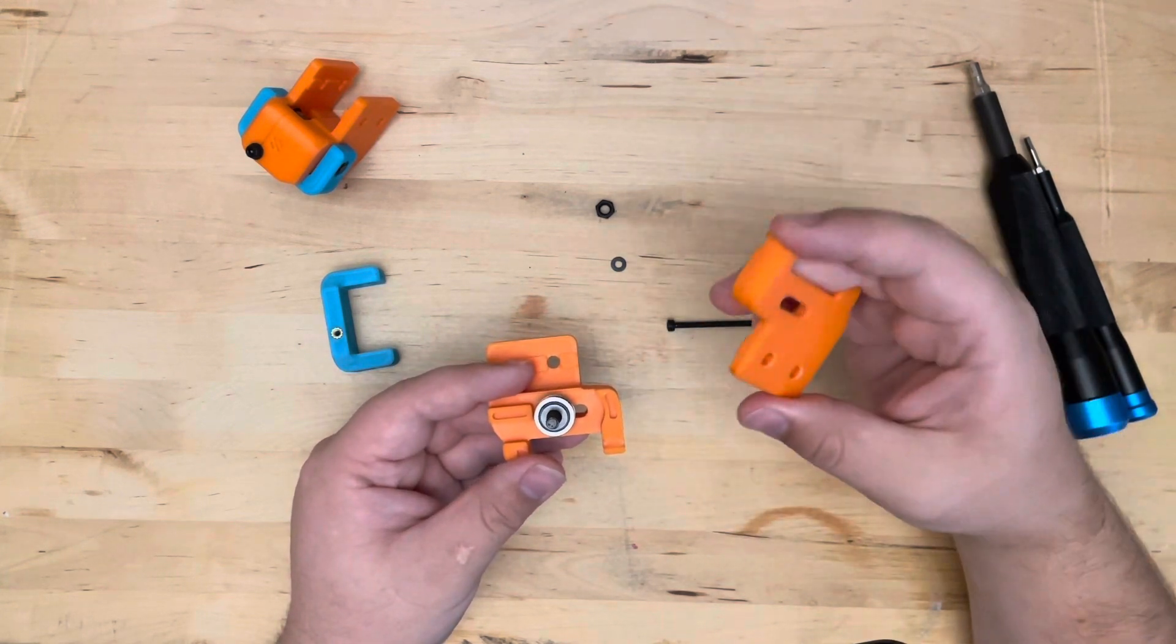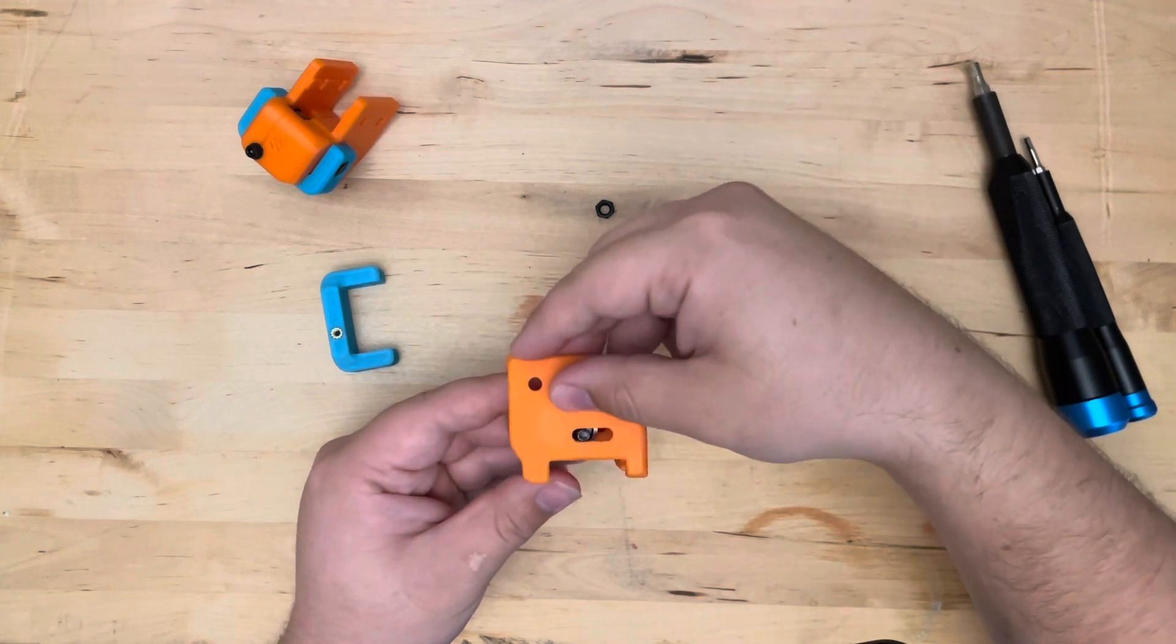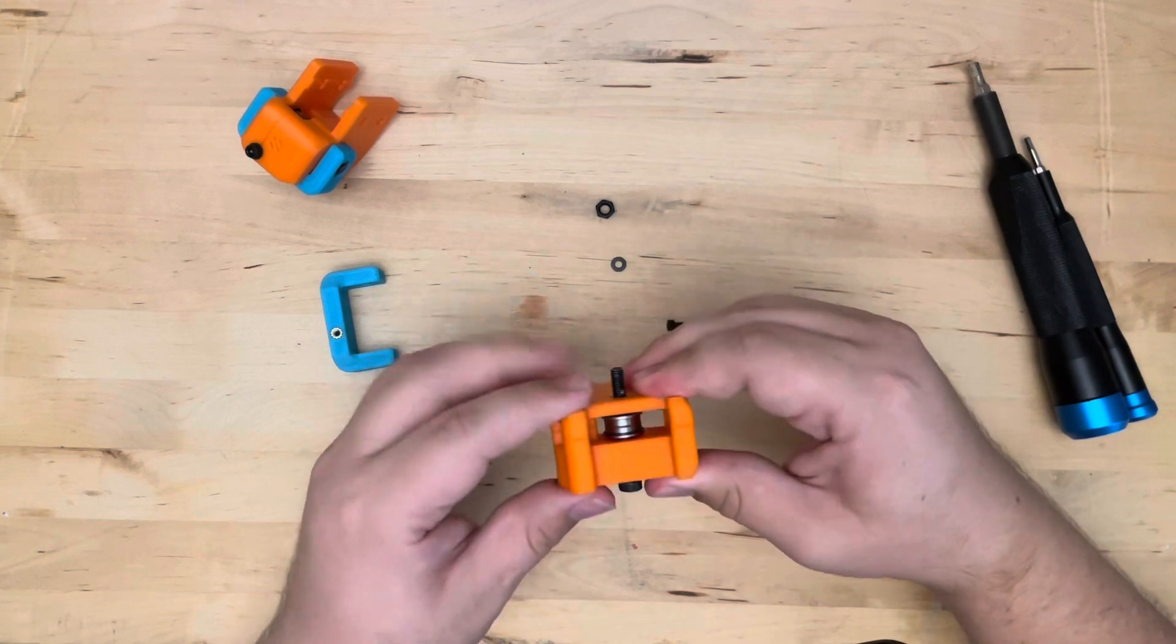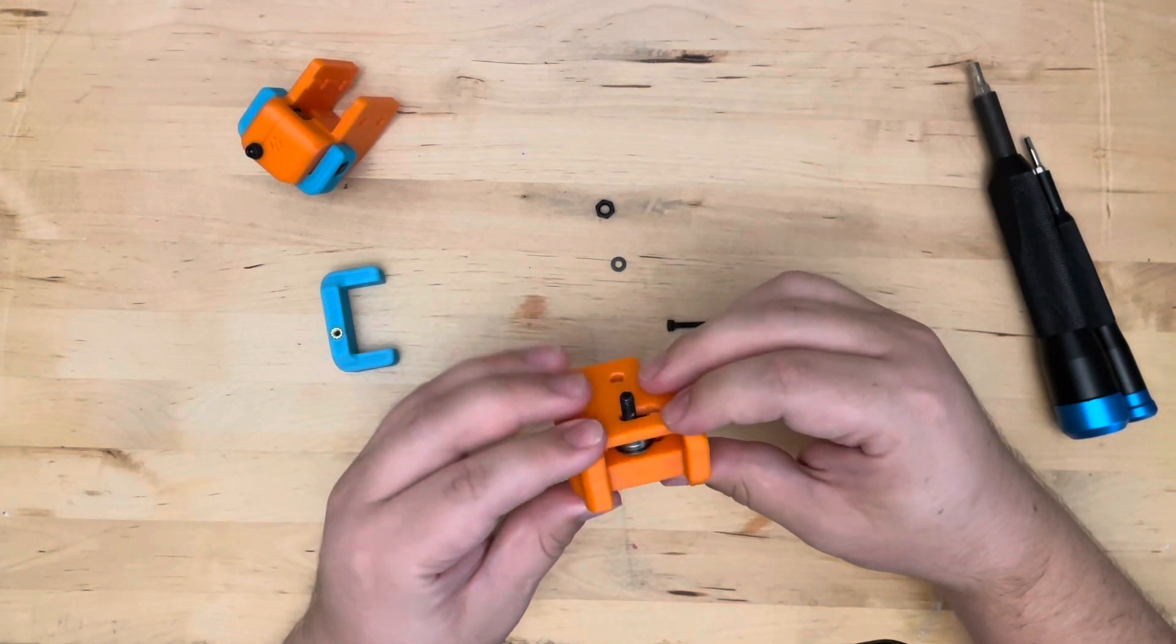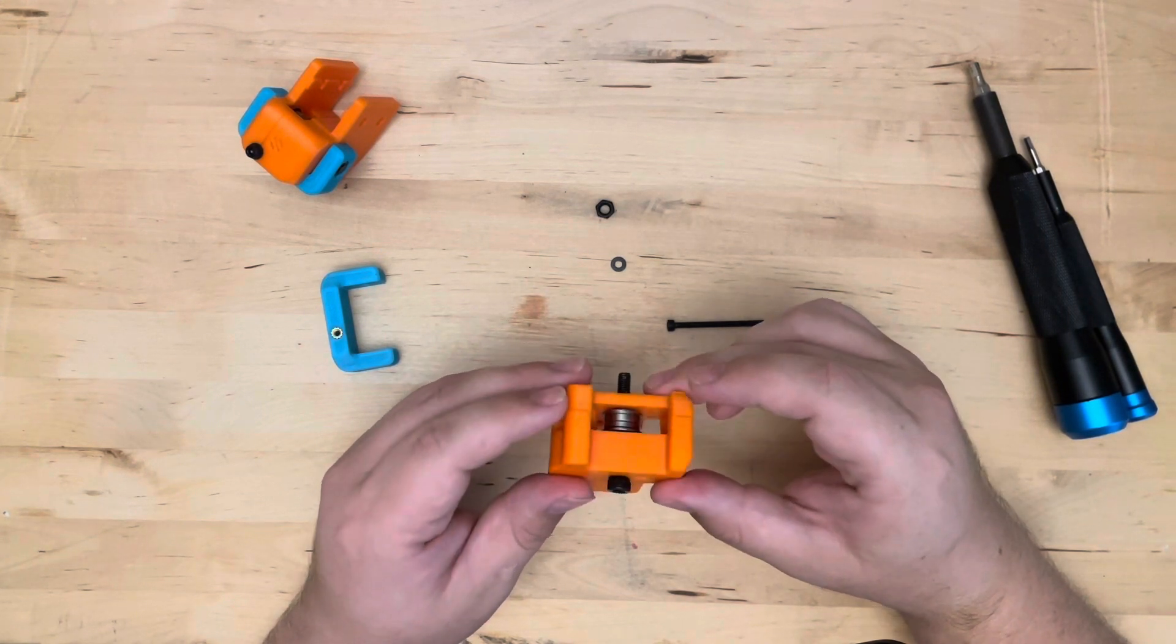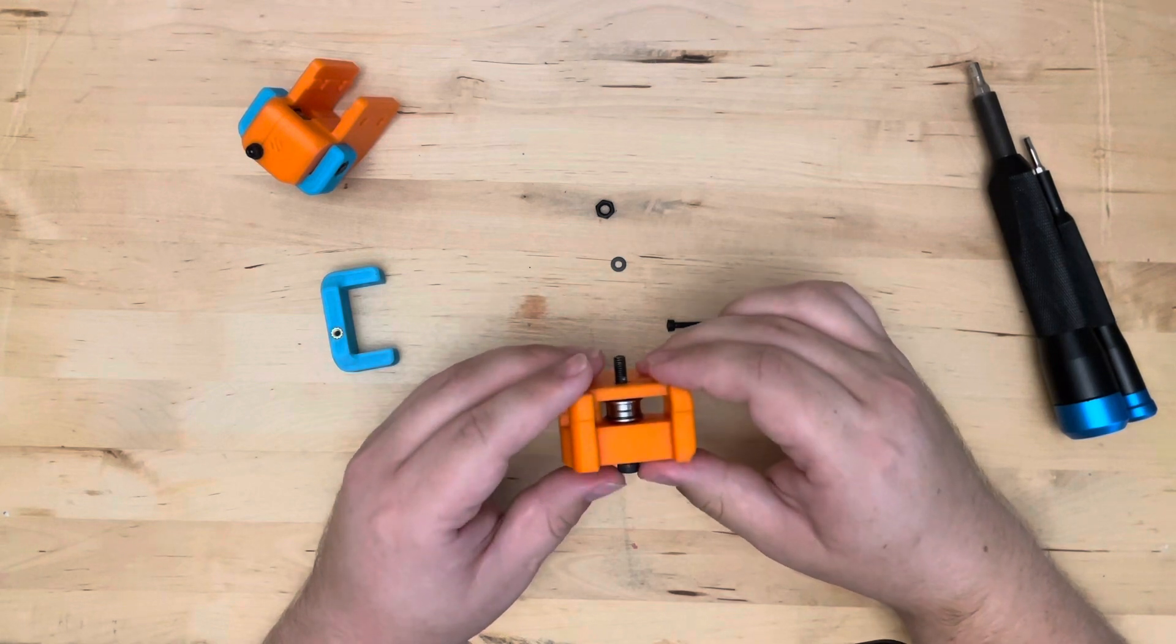Next we're going to put the final M5 washer in here. And we are going to take the B part of the idler body and press that on there like so. It should press fit. In my case there's a small gap, but that's just because I didn't tune my filament quite as well as I should have. It shouldn't affect its functionality at all.